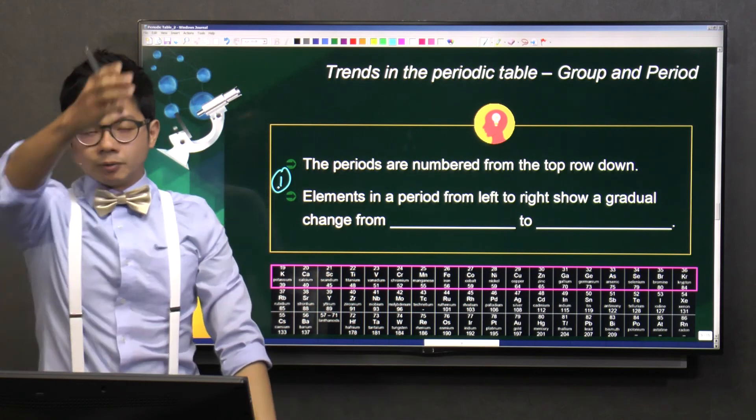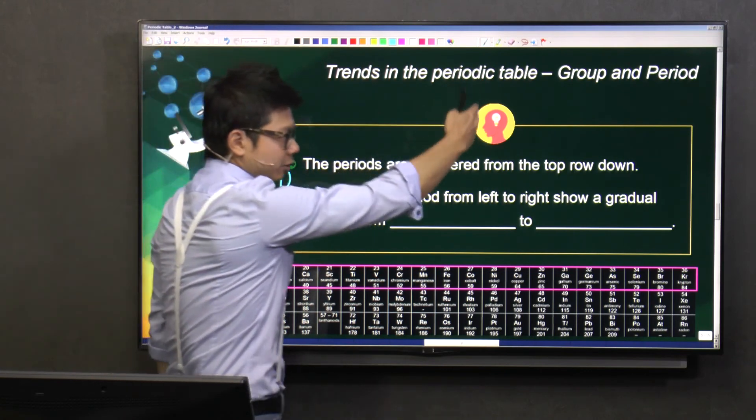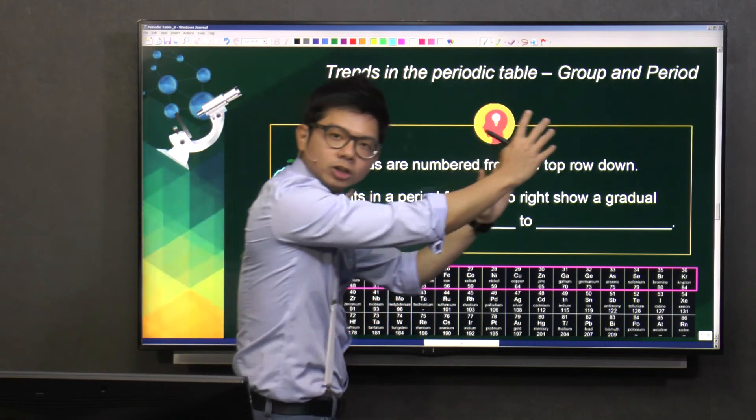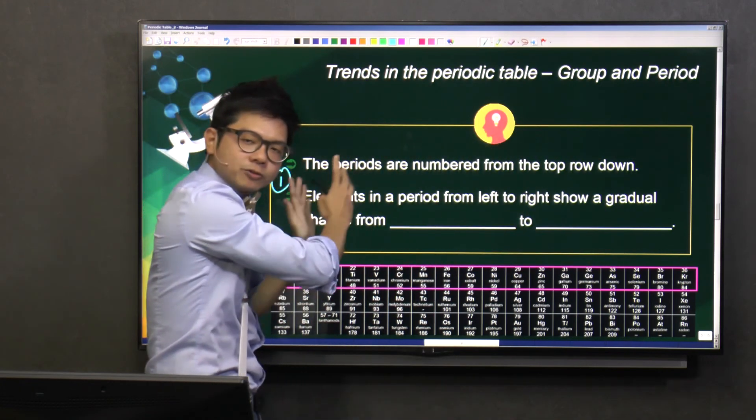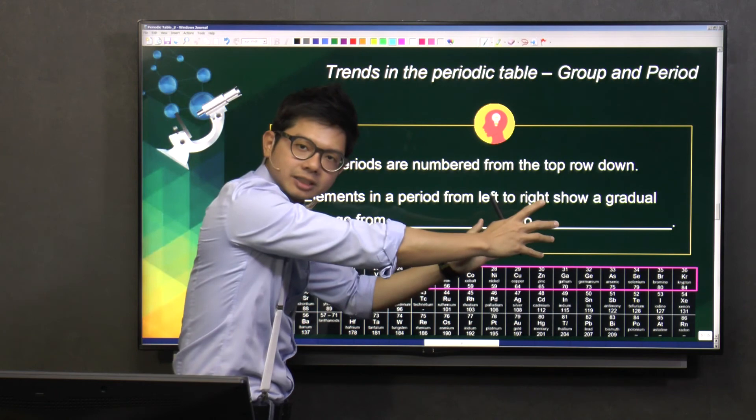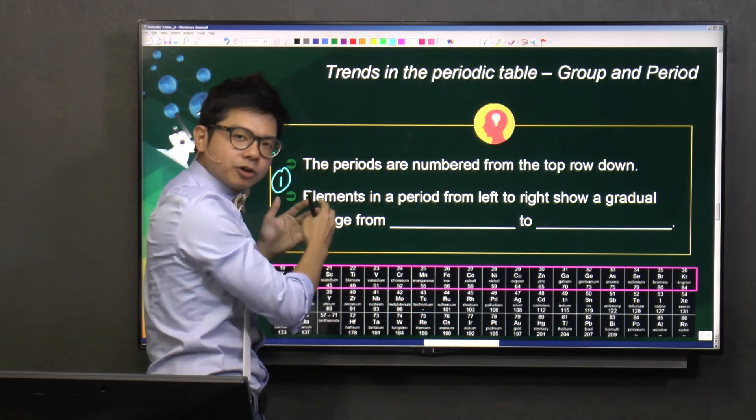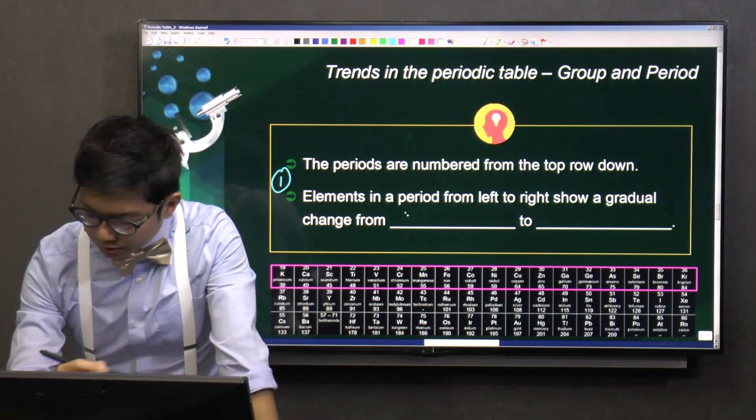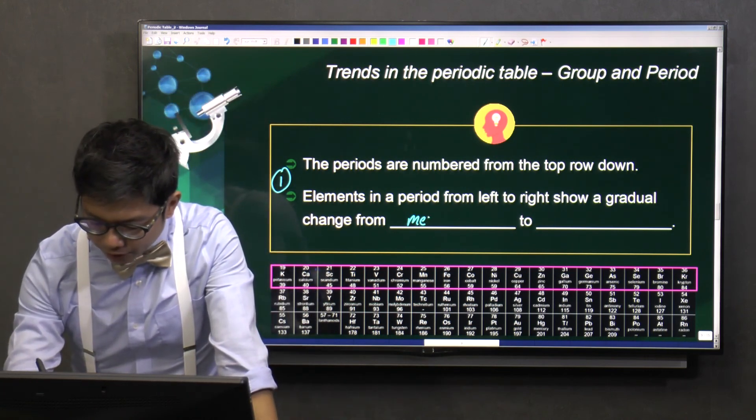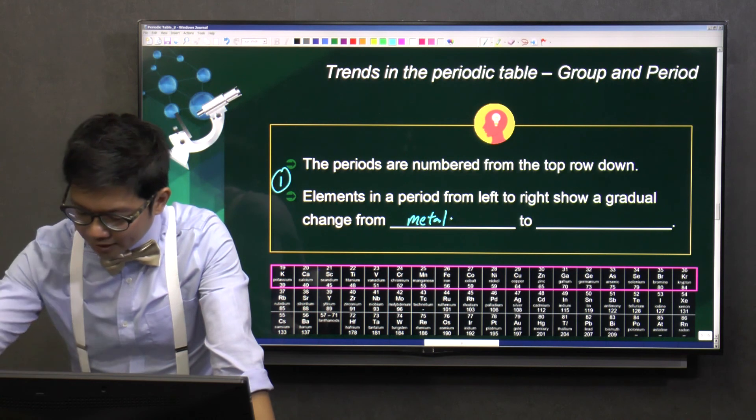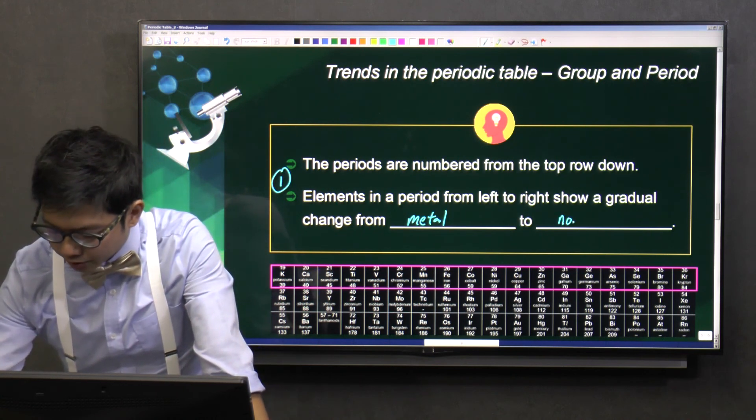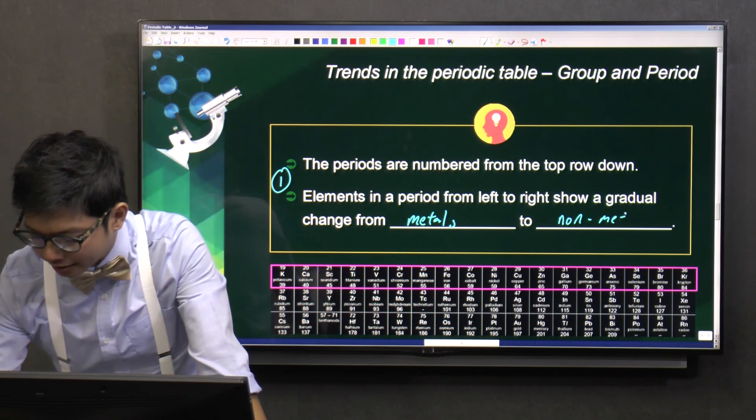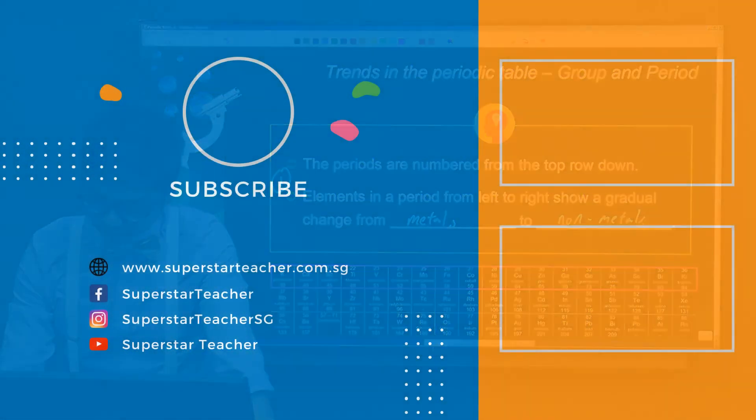We know that when we draw the zigzag line, the left side are all matters, the right side are all non-matters. So as we move from the left to the right, we see a gradual change from matters to non-matters. So to fill in the blanks, as you move from the left to the right, it shows a gradual change from matters to non-matters. Take note.